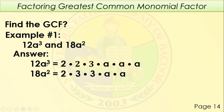Kapag nagmumultiply ka ng variable na pareho ang base, i-add mo lang palagi yung exponent nila — meron yung imaginary 1 na exponent. So a times a is a squared, and times another a is a cubed. Ganun din yung mangyayari kay 18a squared. Ang prime factors ni 18 is 2 times 3 times 3. At ang a squared ay may dalawang a lang, kasi a times a — 1 plus 1 — ang sagot ay a squared.